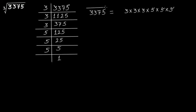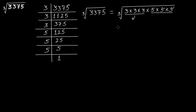So if you find the cube root, take three 3 times and five 3 times — take one 3 from here and one 5 from here, that is 15. The cube root of 3,375 is equal to 15.